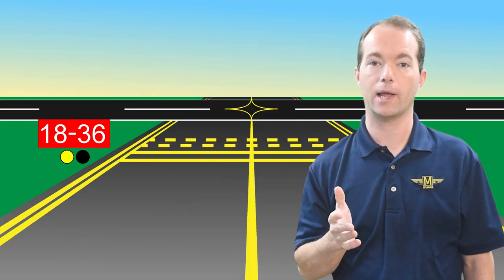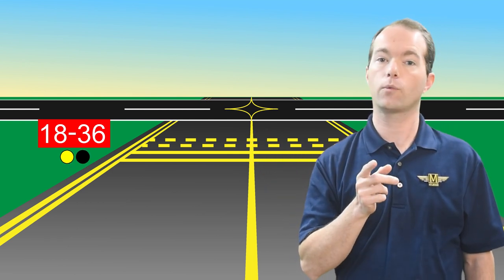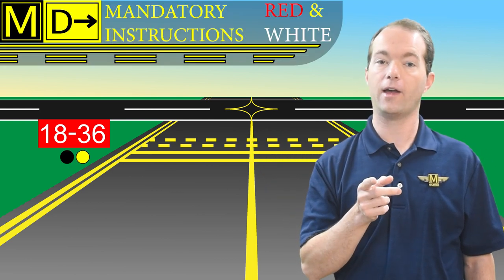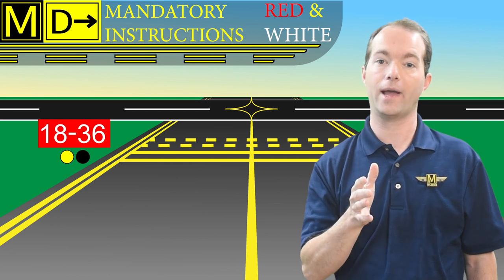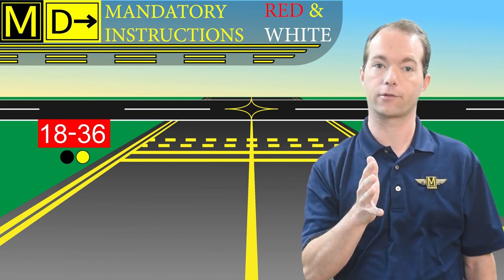When you get to a runway and the hold short line, you might see a hold short symbol on a sign. You'll probably also see the flashing yellow lights like a train sign, but in yellow. Along with the hold short, you're going to see the runway entrance sign — it's red with white letters, and it tells you which runway you're about to enter.